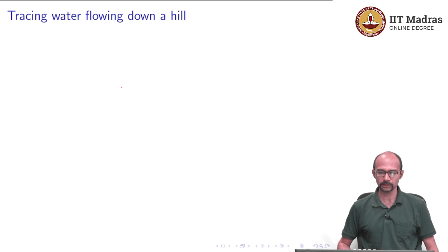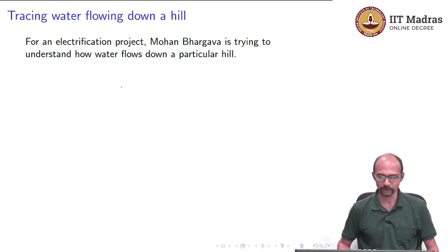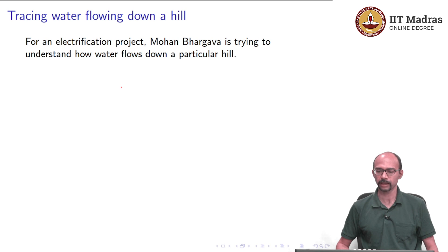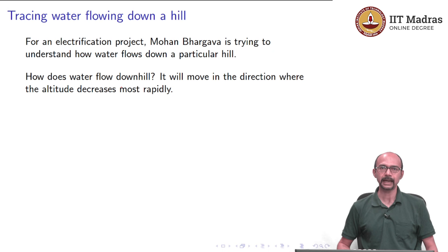Let us start with a question about how to trace water flowing down a hill. For an electrification project, someone named Mohan Bhargava is trying to understand how water flows down a particular hill. Water always moves in the direction where the altitude decreases most rapidly.